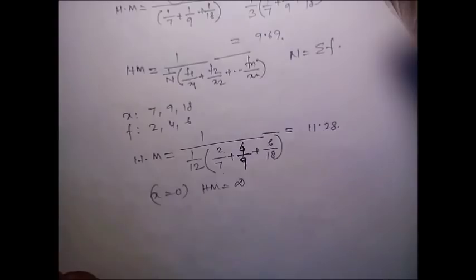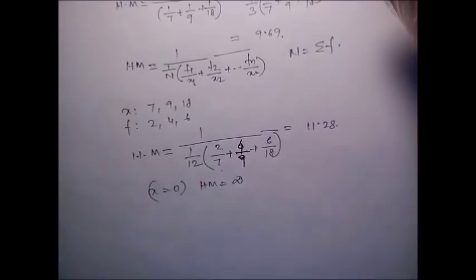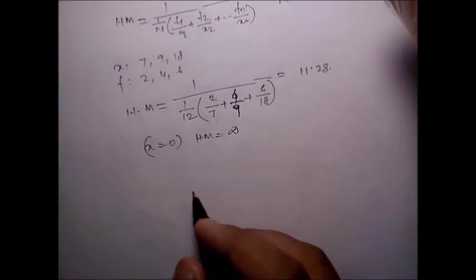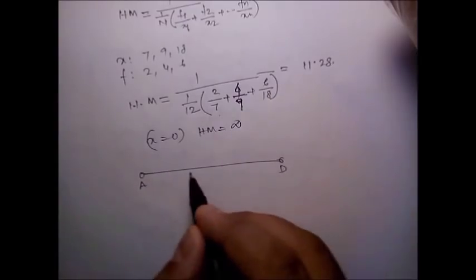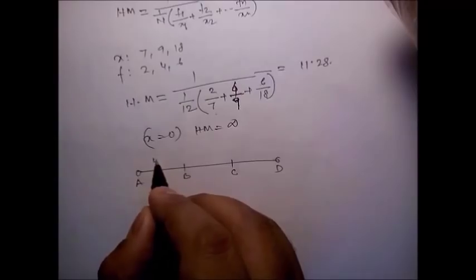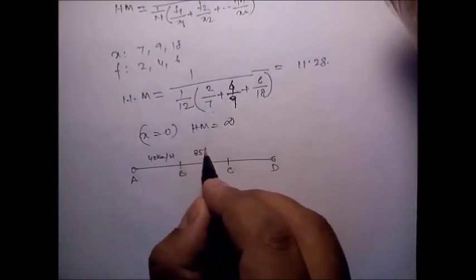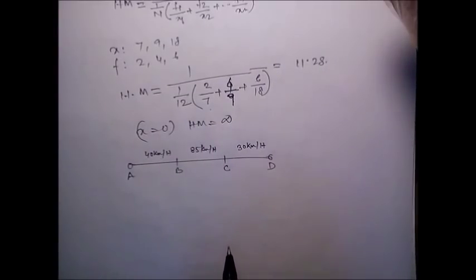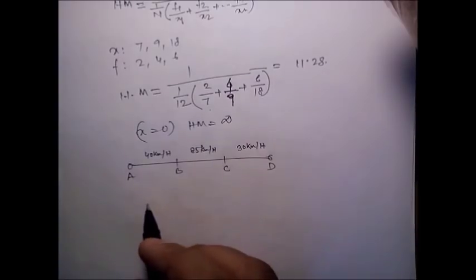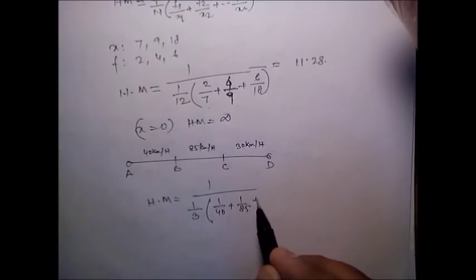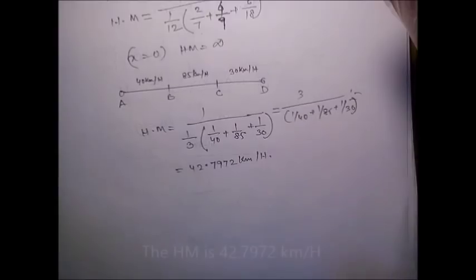Harmonic mean is the better average when numbers are defined in relation to some unit — the common example is averaging speed. Suppose we have a trip with equal distance segments: A to B at 40 km/h, B to C at 85 km/h, and C to D at 30 km/h. To calculate average speed, we use harmonic mean: HM = 3 / (1/40 + 1/85 + 1/30).